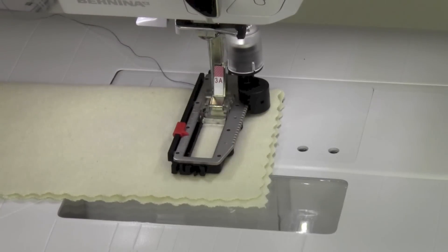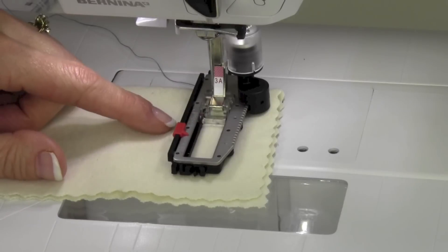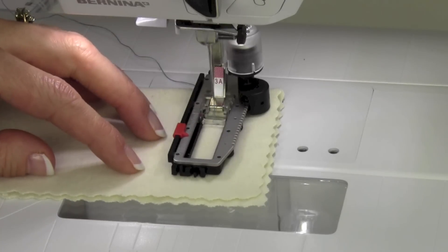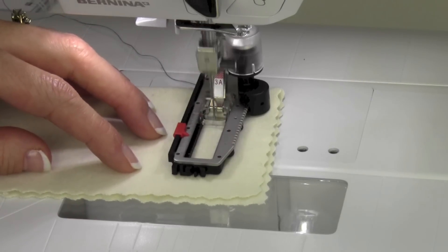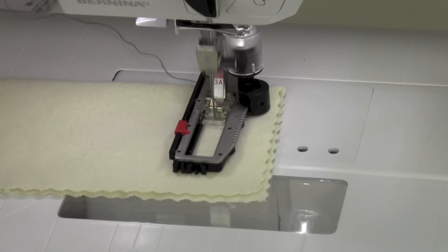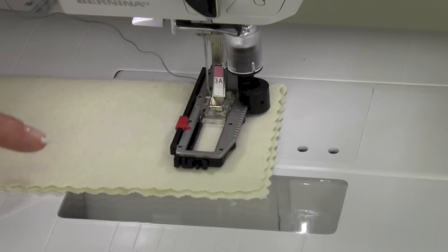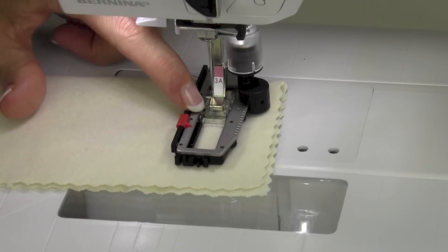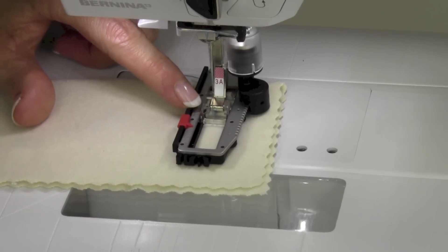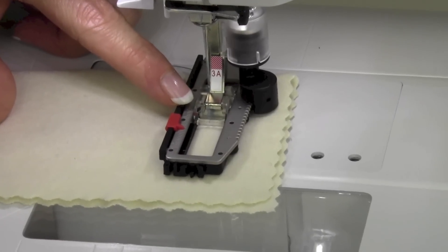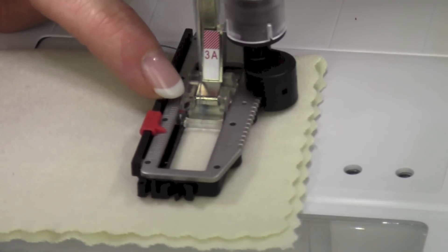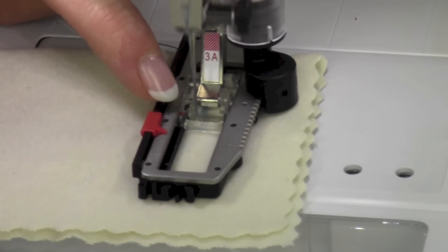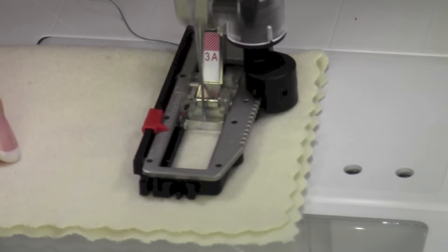For the first one, the machine does not know how long you want this buttonhole to be, so the only thing you need to do is start to stitch. It's going to start off with some locking stitches and start sewing down the left leg of the buttonhole. Now, there's a red mark right here. I'm going to go ahead and zoom in just a little bit more. There's a red mark that's matched up with the needle.